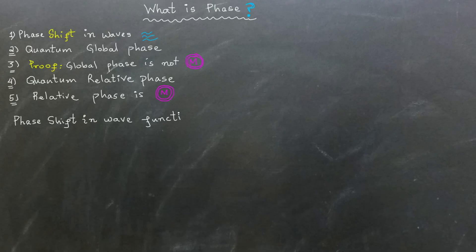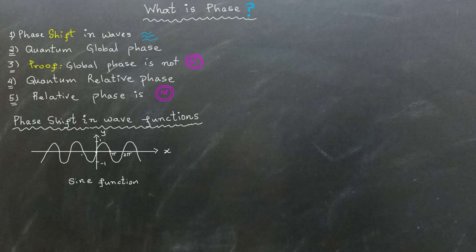Phase shift in wave functions. Consider the graph of the sine function. Although any wave function could serve our purpose, the sine function is widely recognized and works well for our illustration. The process of moving this graph horizontally to the left or right is known as phase shift.